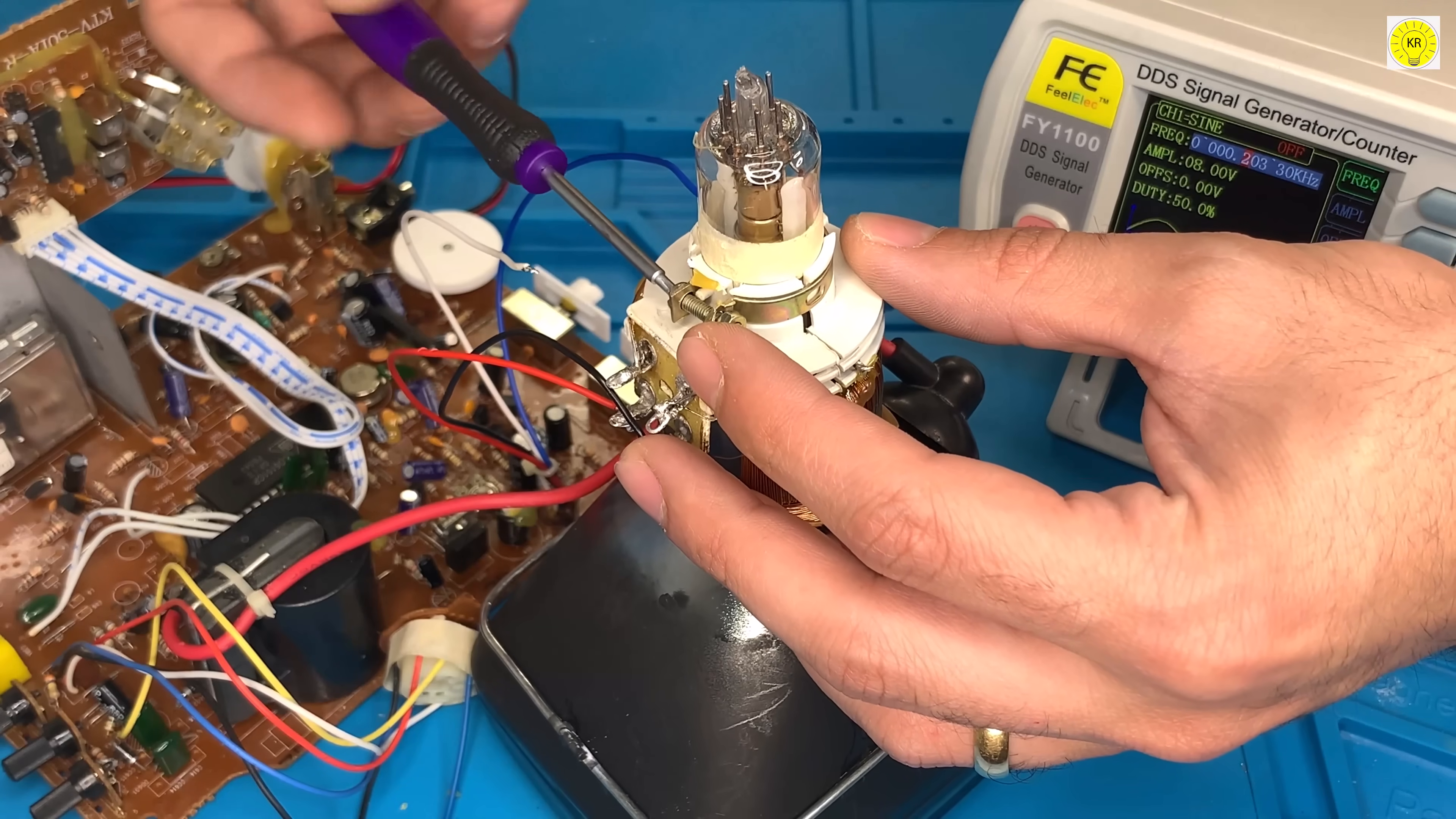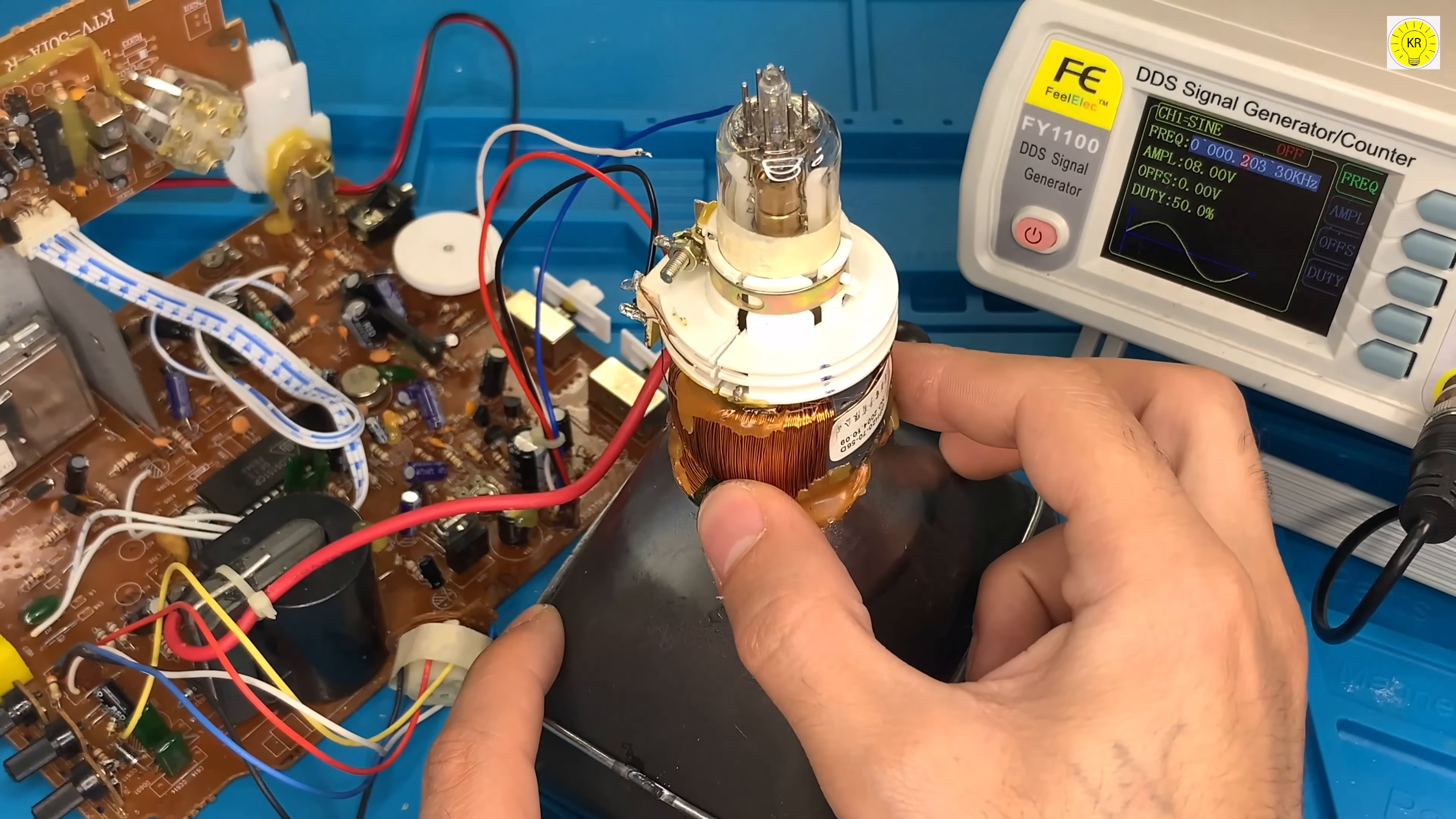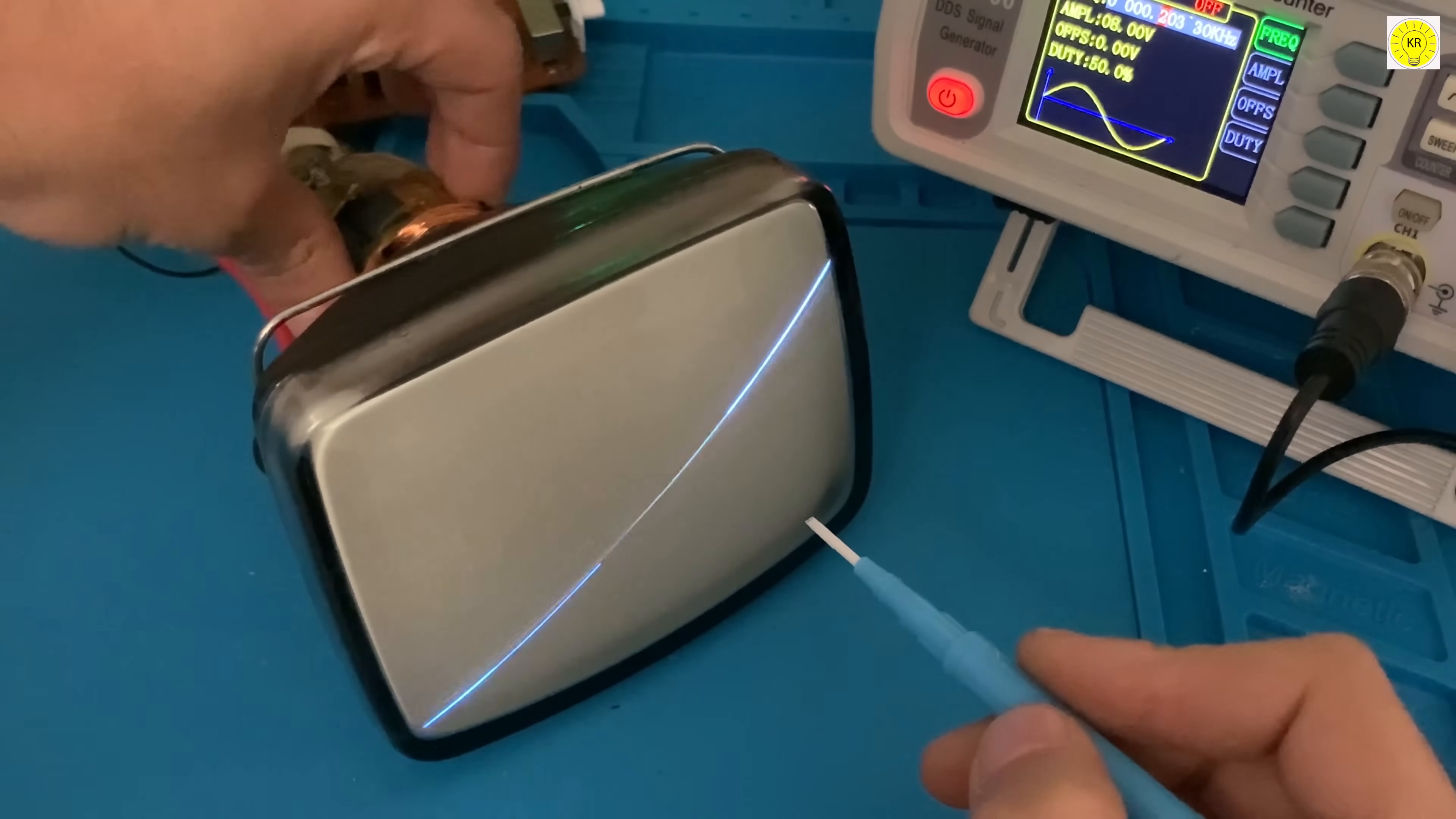To solve this problem, we move the deflection coils at angles that are 180 degrees. Now you can see the line appear horizontally. By moving the deflection coils in a certain direction in a circular way, we can move the line at the angle we want.